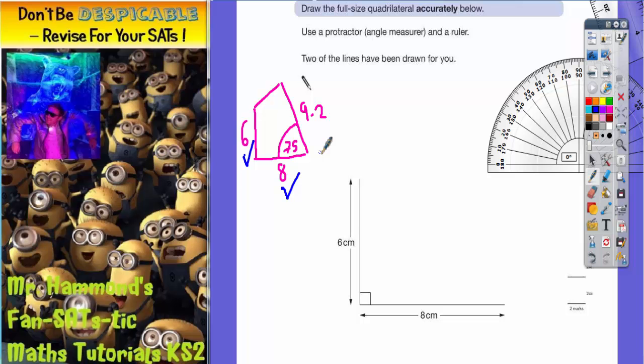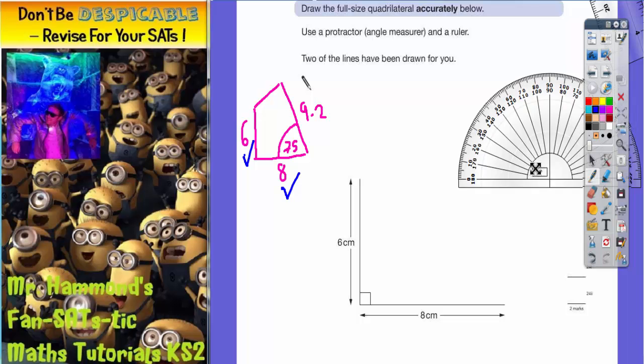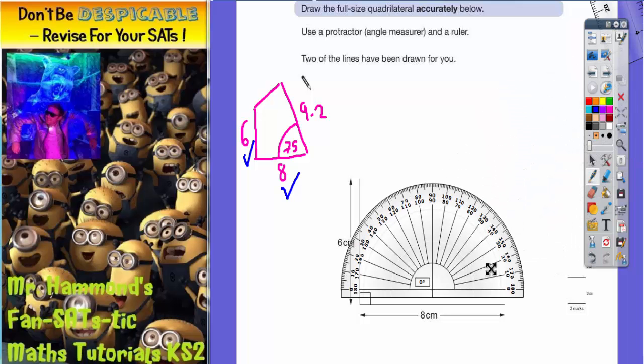I can't do the 9.2cm line yet because I wouldn't know which direction to point my ruler—up here, over there, or flat. So I need to do the 75 degrees first. When I pick up the angle measurer, I need to decide which end to put it on.